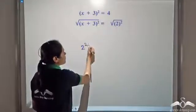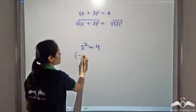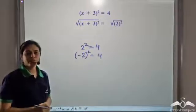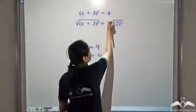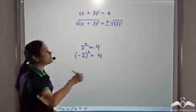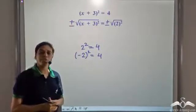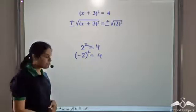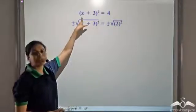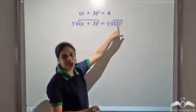Now, 2² = 4, and also (−2)² = 4. So we need to consider both the positive and negative square root of 4. Similarly, for the left hand side, we need to consider both the positive and negative square root. So we take the positive and negative square root of the left hand side and the positive and negative square root of the right hand side, which is 4.